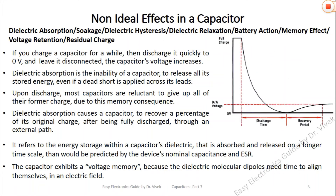Dielectric absorption causes a capacitor to recover a percentage of its original charge after being fully discharged through an external path. The capacitor exhibits a voltage memory because the dielectric molecular dipoles need time to align themselves in an electric field. Dielectric absorption is the inability of a capacitor to release all its stored energy even if a dead short circuit is supplied across its leads.